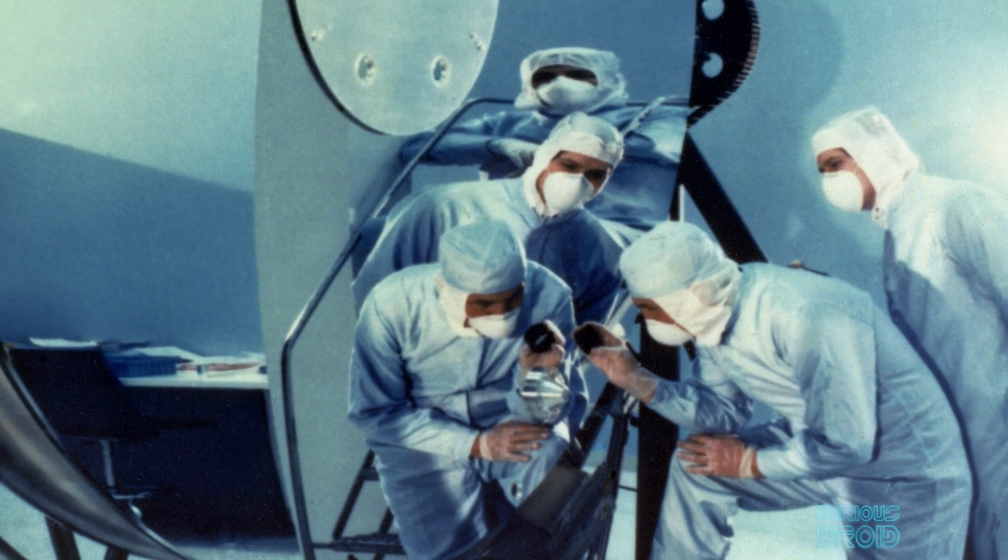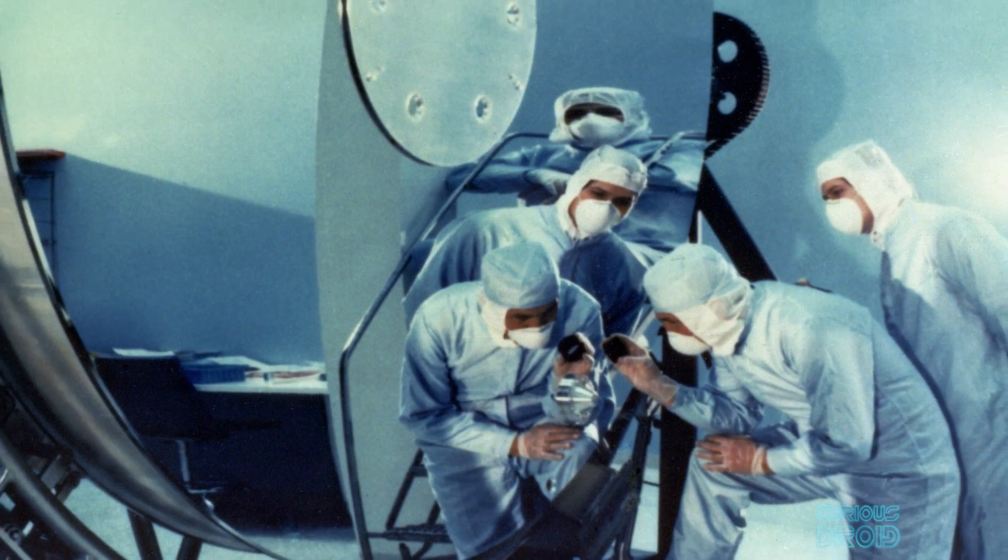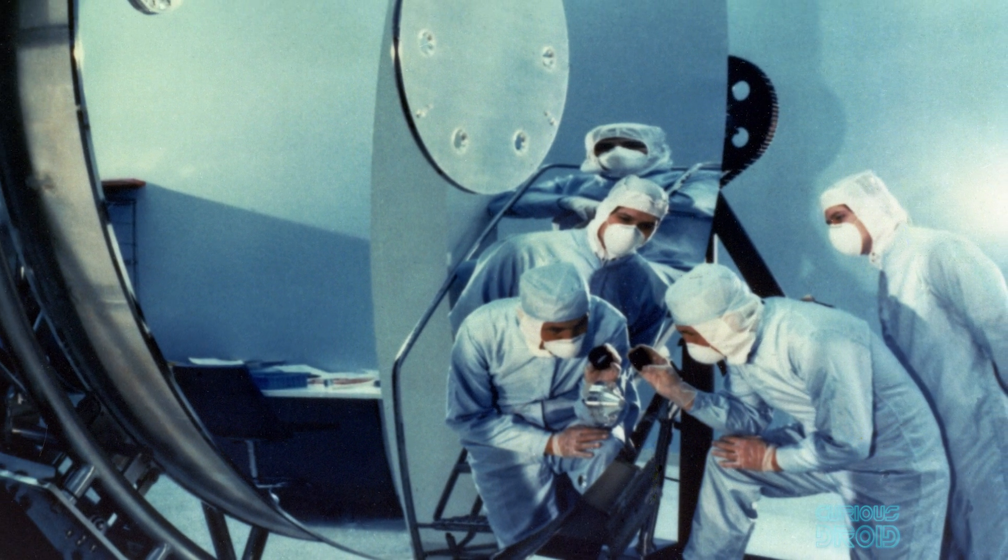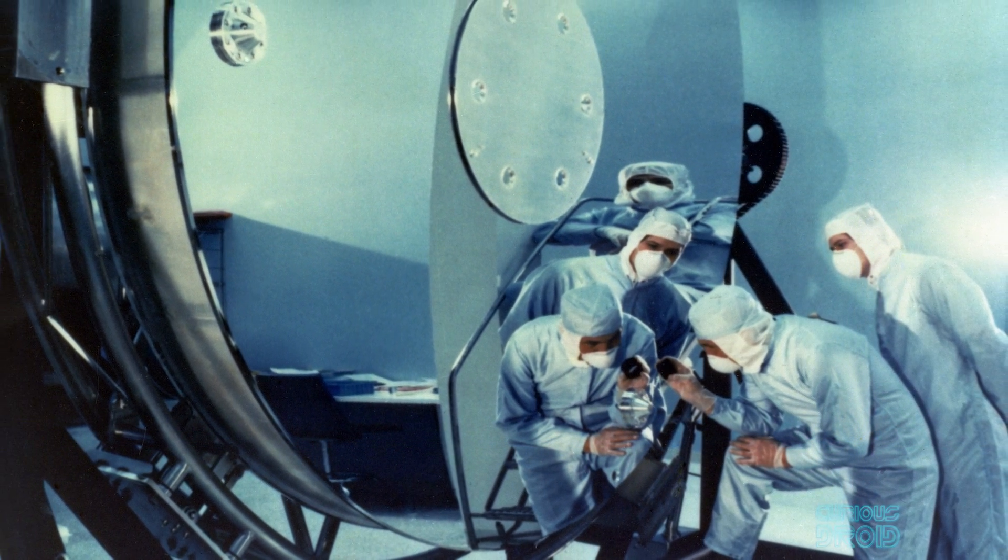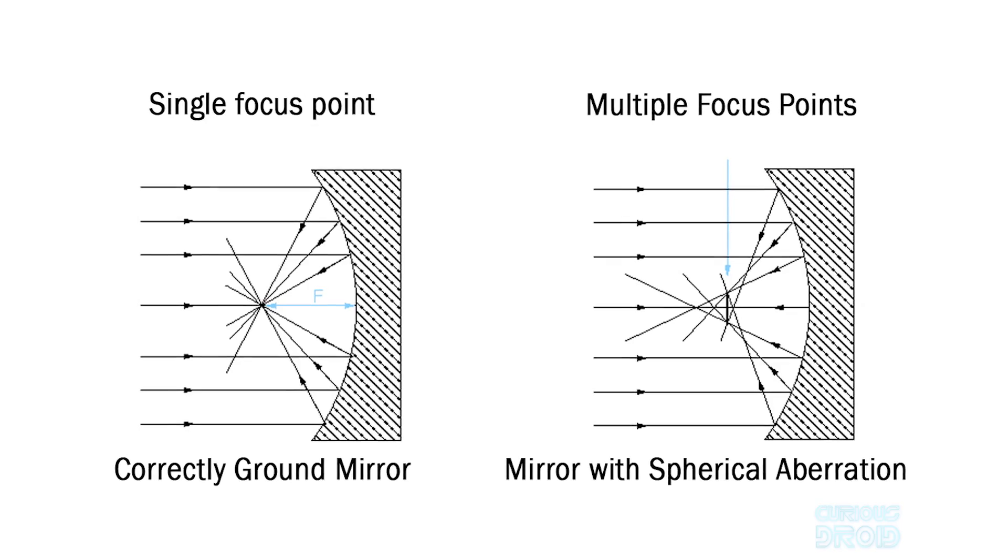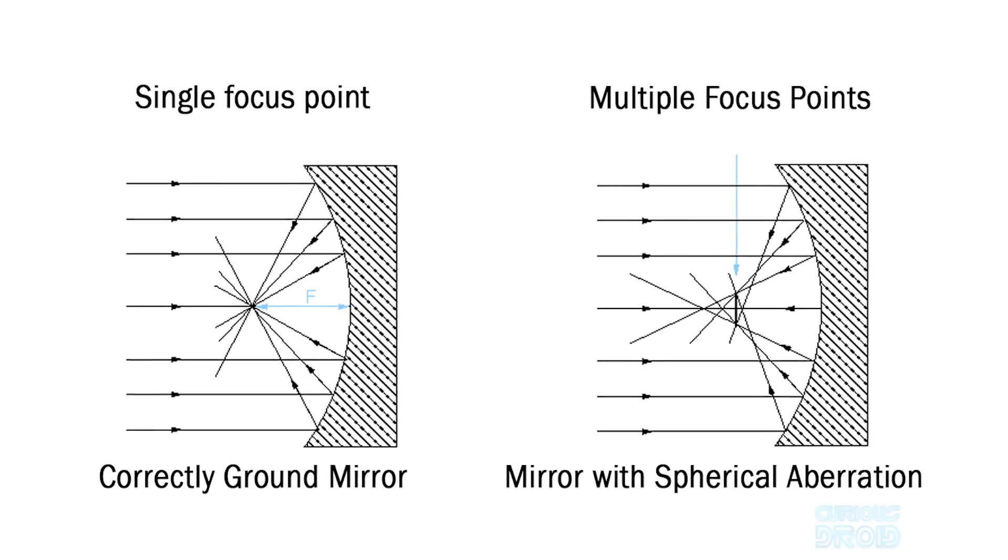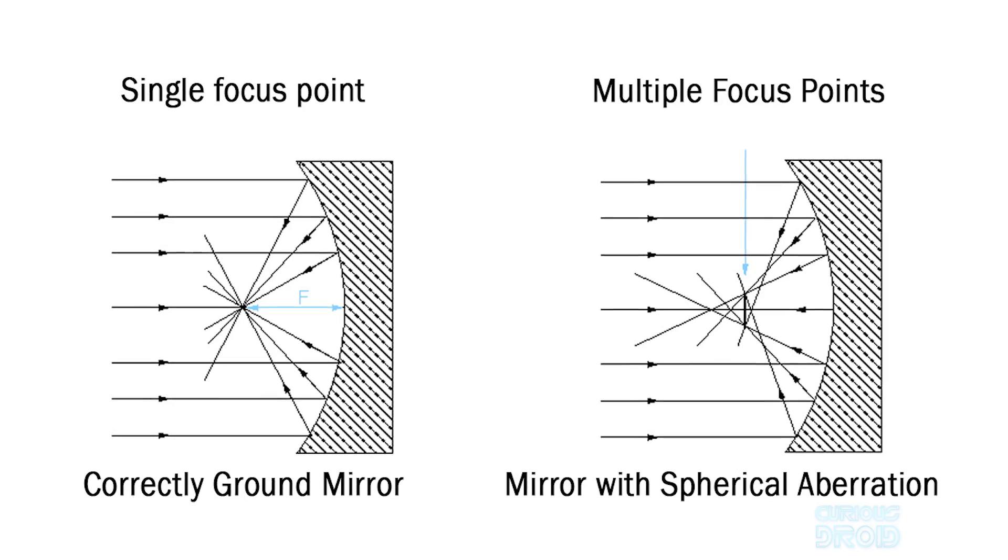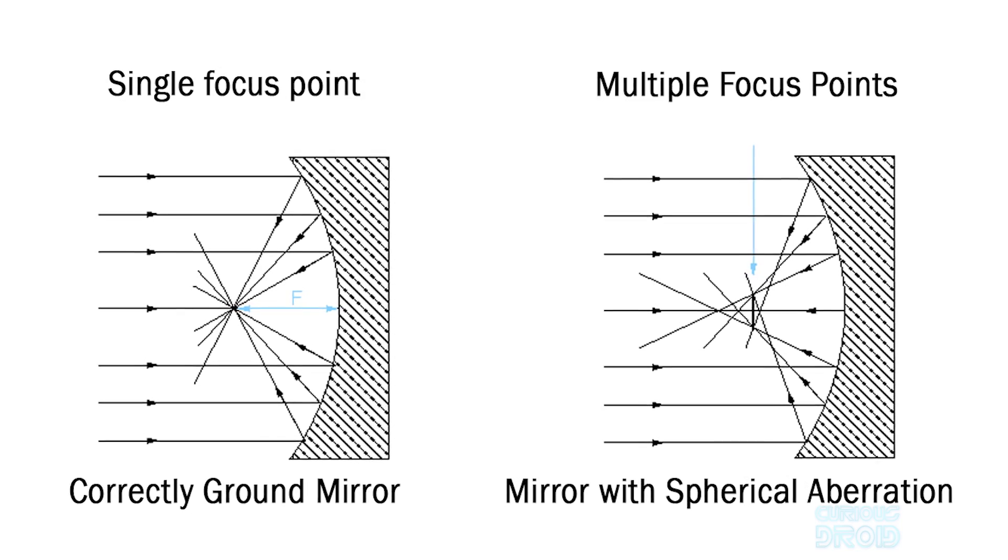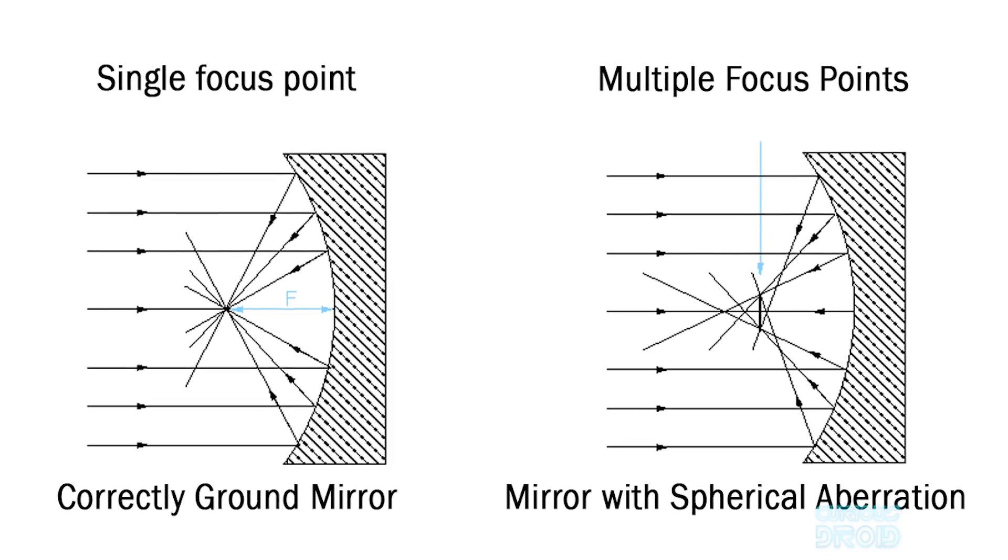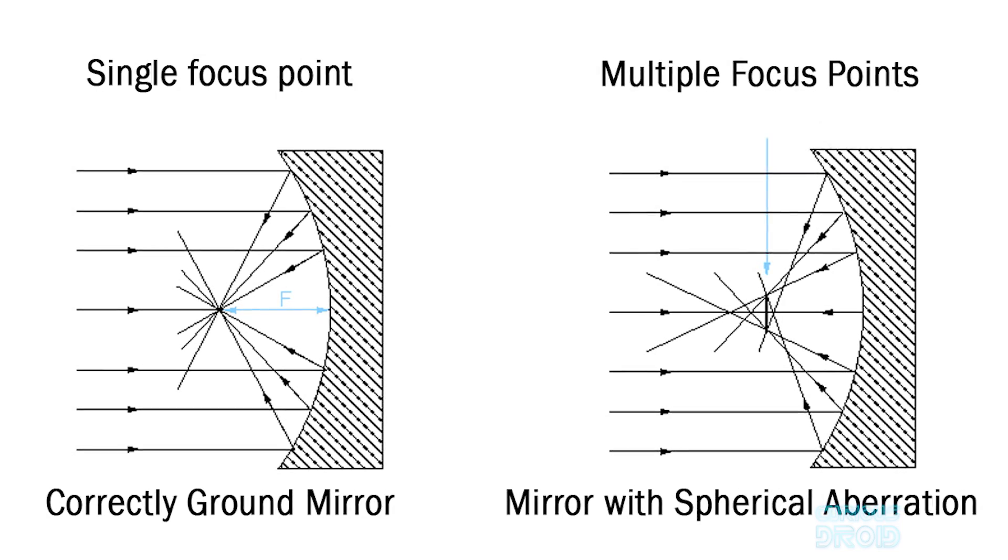Hubble's 2.5 meter (8.2 foot) mirror was rendered incapable by an error in its shape less than 1/50th the width of a human hair. The primary mirror suffered from spherical aberration, more often found in sloppily made amateur telescope projects, not multi-million dollar space telescopes.